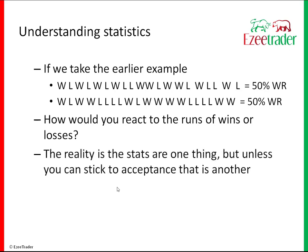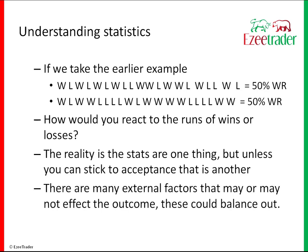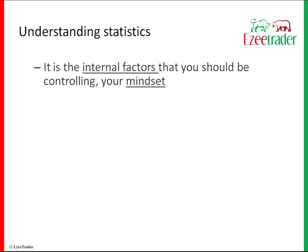However, the reality of the stats is one thing, but unless you can stick to acceptance, that's another. There are many external factors that may or may not affect the outcome — sometimes you get stopped out on what looks a really good trade because Trump has just posted something and the markets go all over the place. Overall these probably largely balance themselves out over the long term. It's the internal factors you should be controlling — your mindset — because the statistics will keep coming. It's how you react to what you're getting that is the key thing.